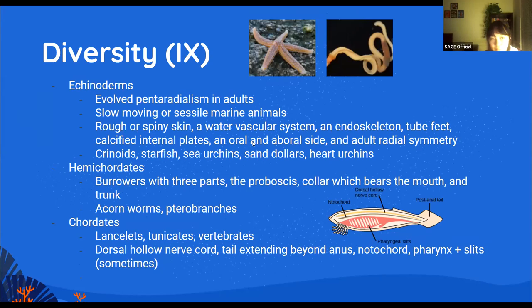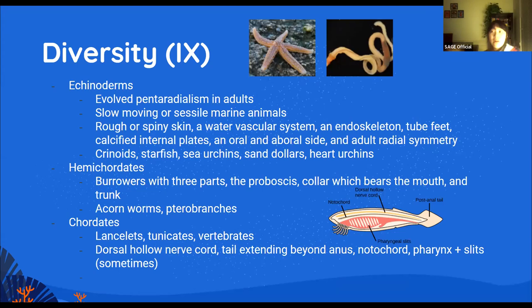Hemichordates are the sister group of echinoderms and include acorn worms and pterobranchs — they are another phylum of worms. Chordates are basically animals that have a notochord, which is what evolved to become our spinal cord.